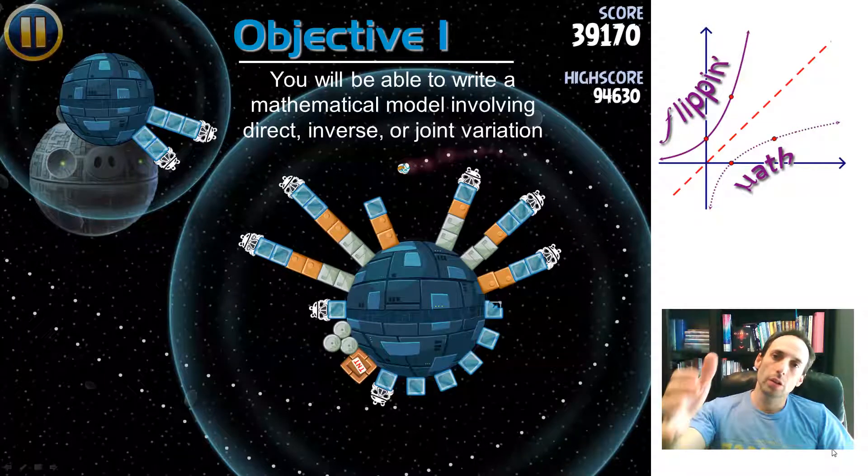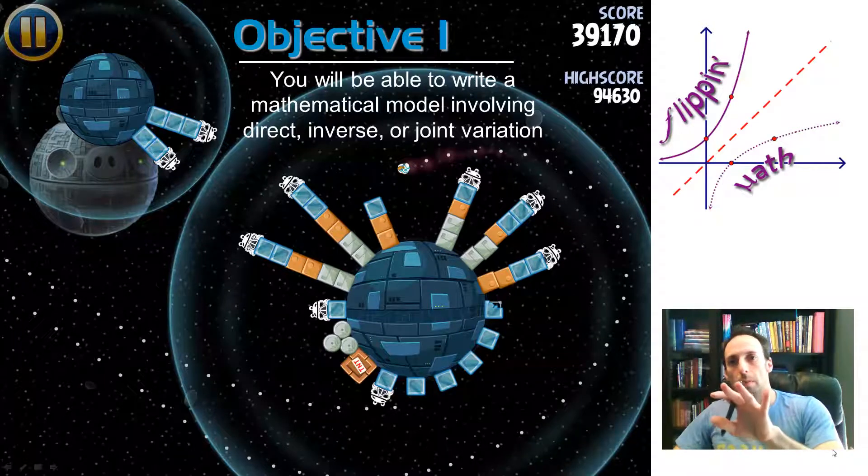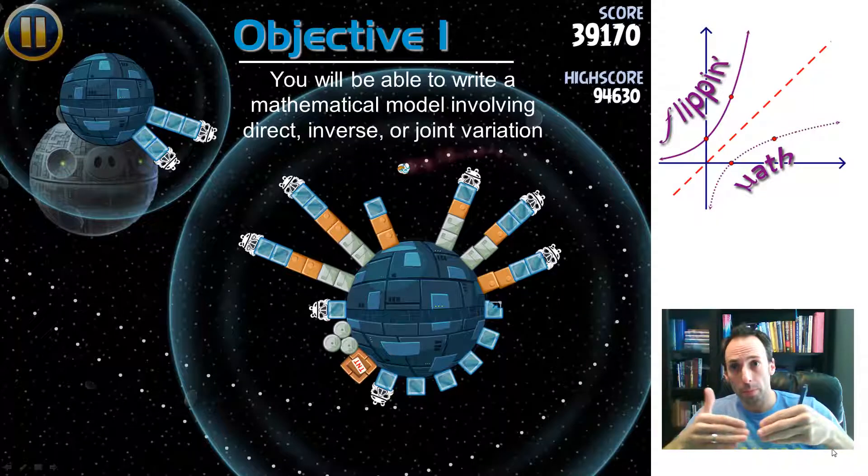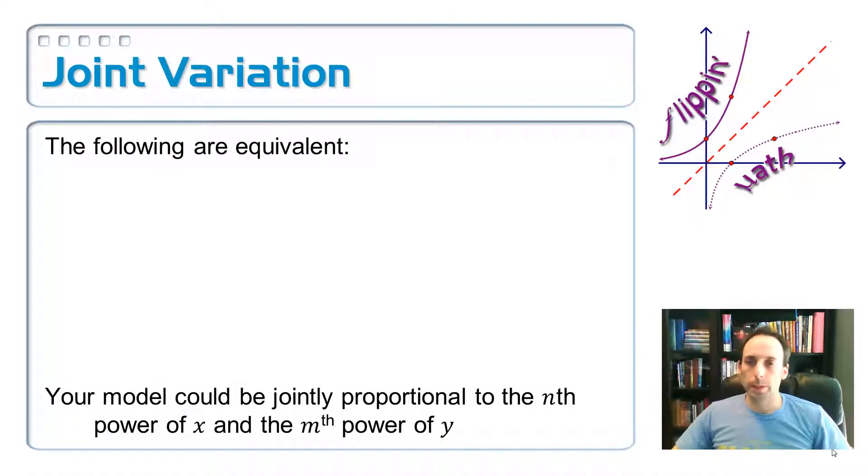And now finally, we're concluding objective one by talking about mathematical models involving joint variation. Joint means we're going to have a couple of variables together. So I'm just going to lay it out for you. Each one of these things are equivalent.